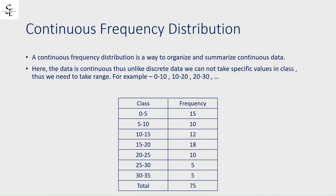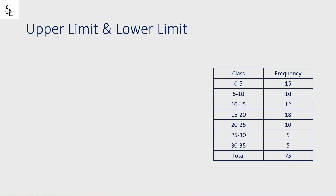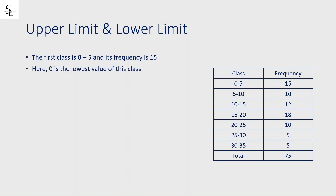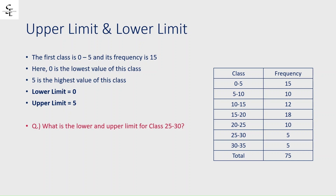The first two terms are upper limit and lower limit. For the class 0 to 5 with frequency 15, there are 15 values which fall under that range. Here 0 is the lowest value, so the lower limit is 0, and 5 is the highest value, so the upper limit is 5. Now find out the lower limit and upper limit for class 25 to 30.